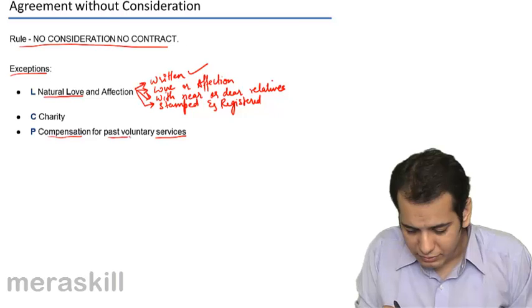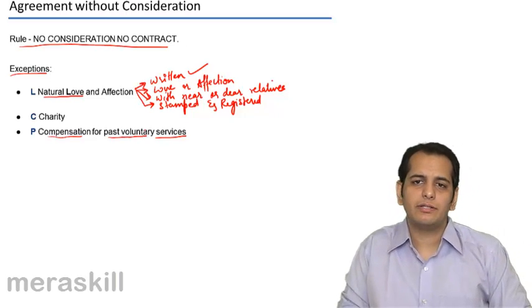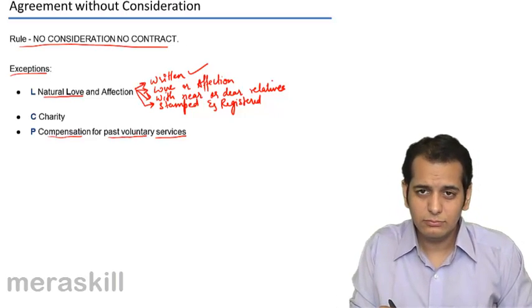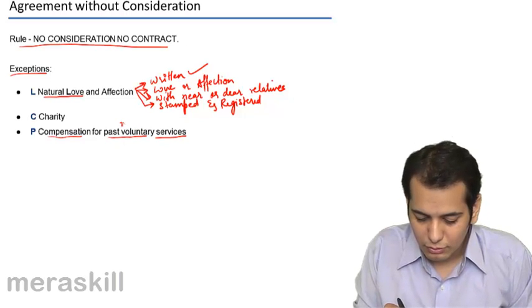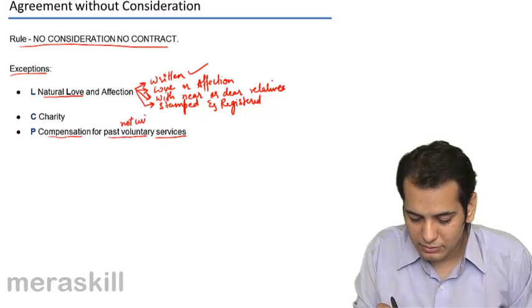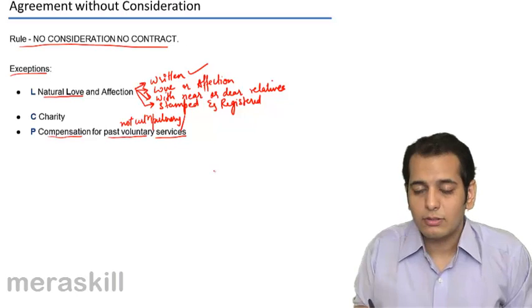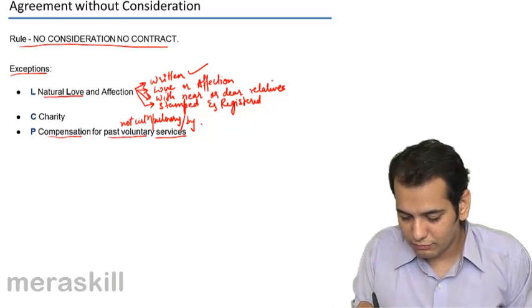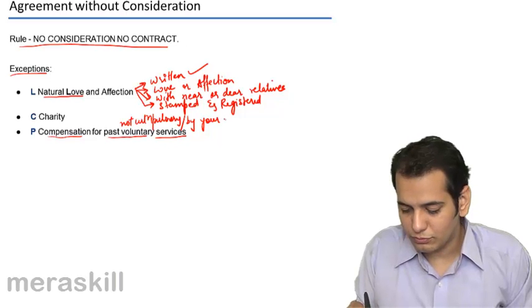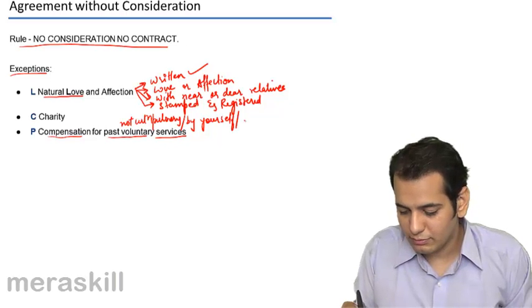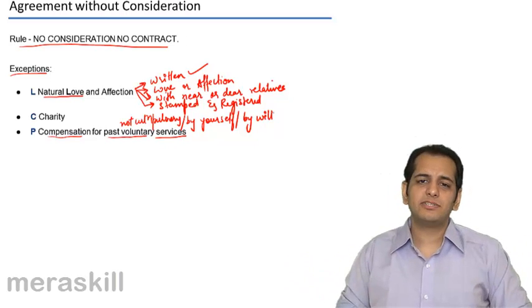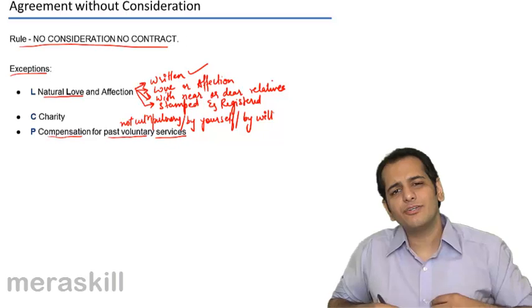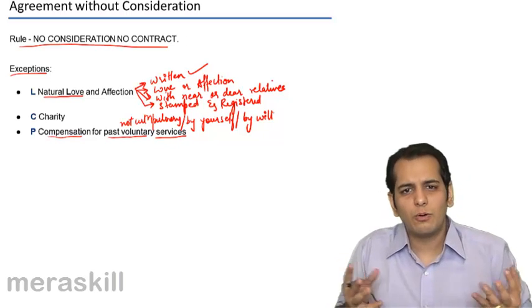But what do you mean by this past voluntary? Voluntary means which is not compulsory, or something which you do by yourself, by your own, by your will. Which is not done under compulsion, which is done under your own wish, your own will. That is voluntary.